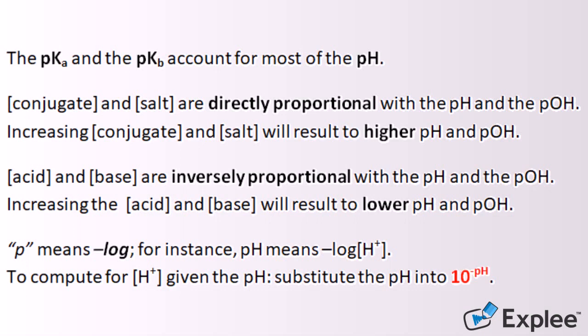p means negative logarithm of. For instance, pH means negative logarithm of the concentration of hydrogen. To compute for the concentration of H plus given the pH or OH minus given the pOH, substitute the pH into 10 raised to negative pH or pOH.